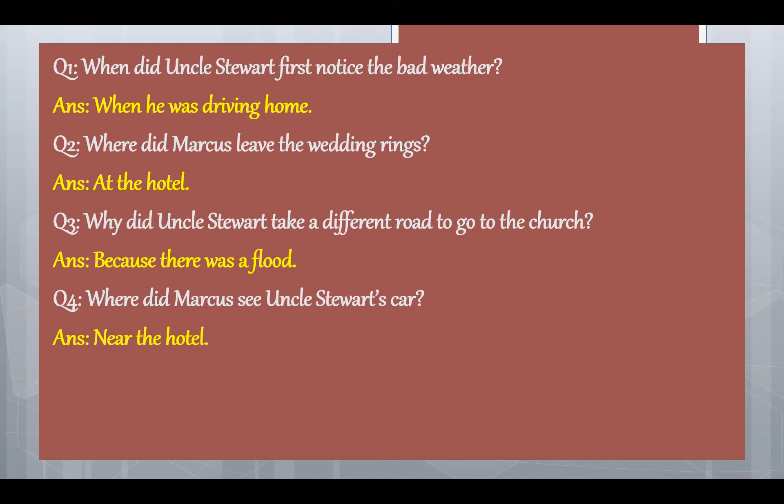Question 3: Why did Uncle Steward take a different road to go to the church? Answer: because there was a flood. Question 4: Where did Marcus see Uncle Steward's car? Answer: near the hotel.